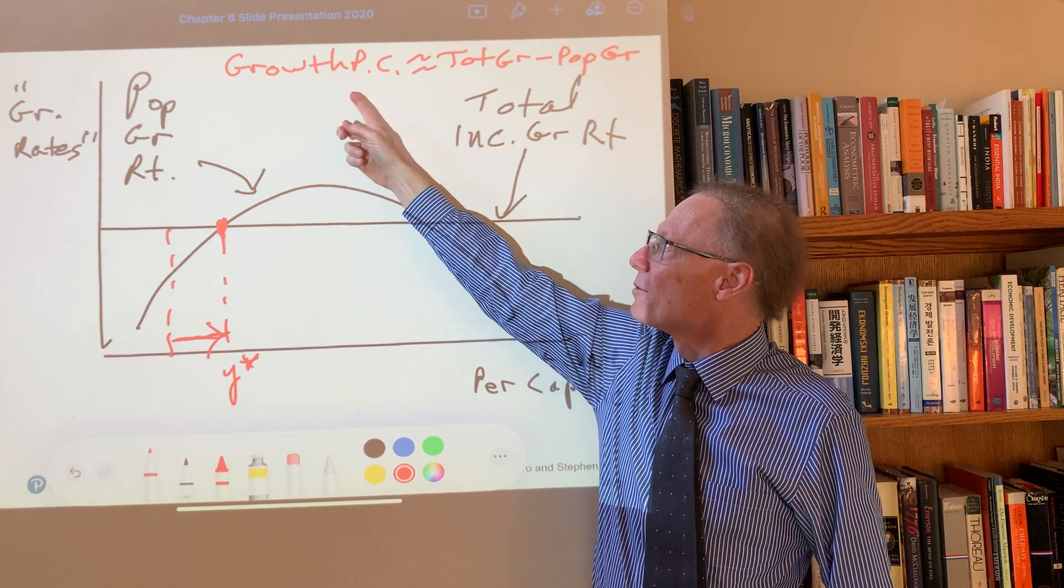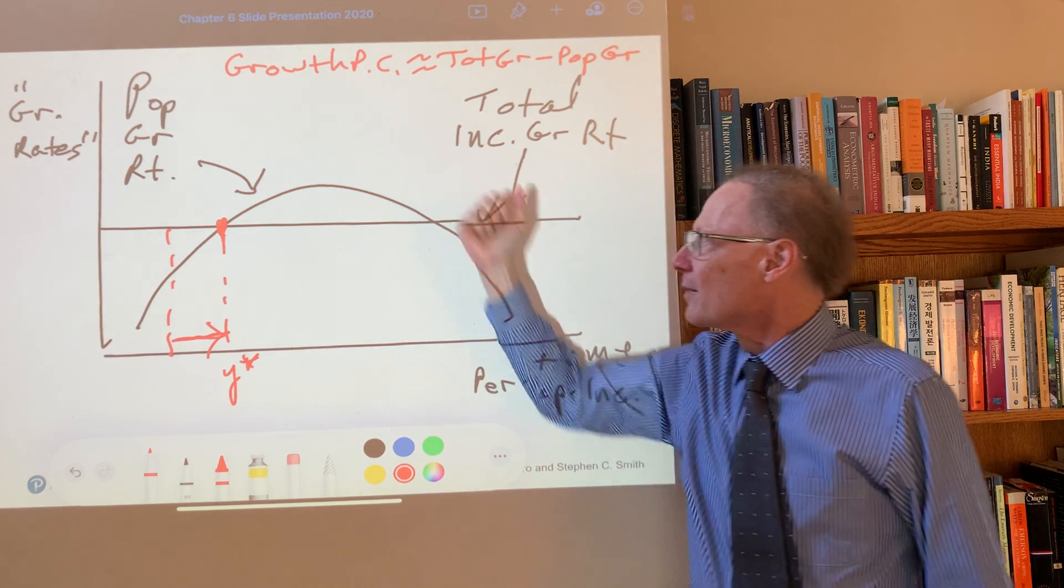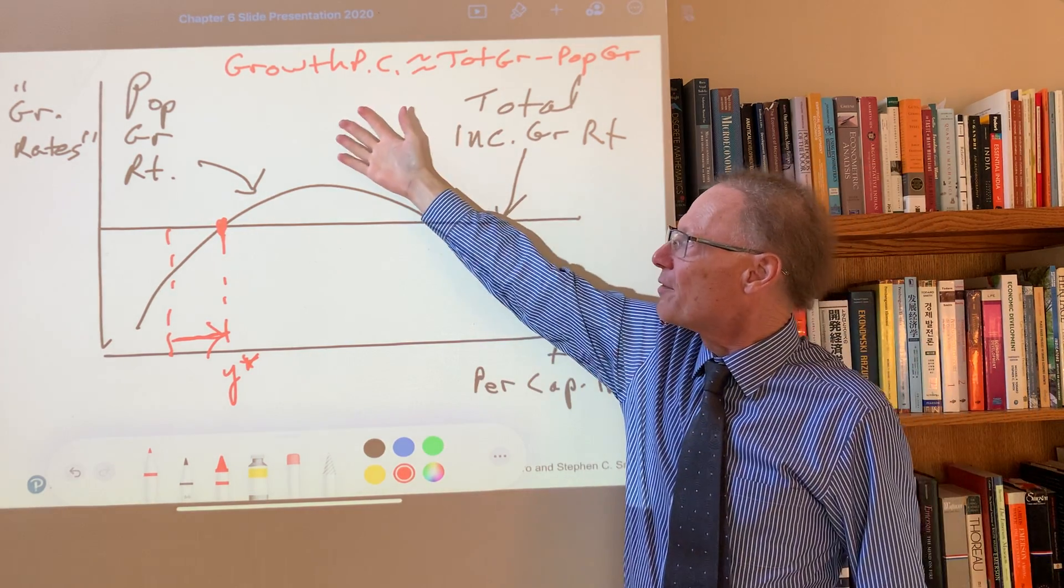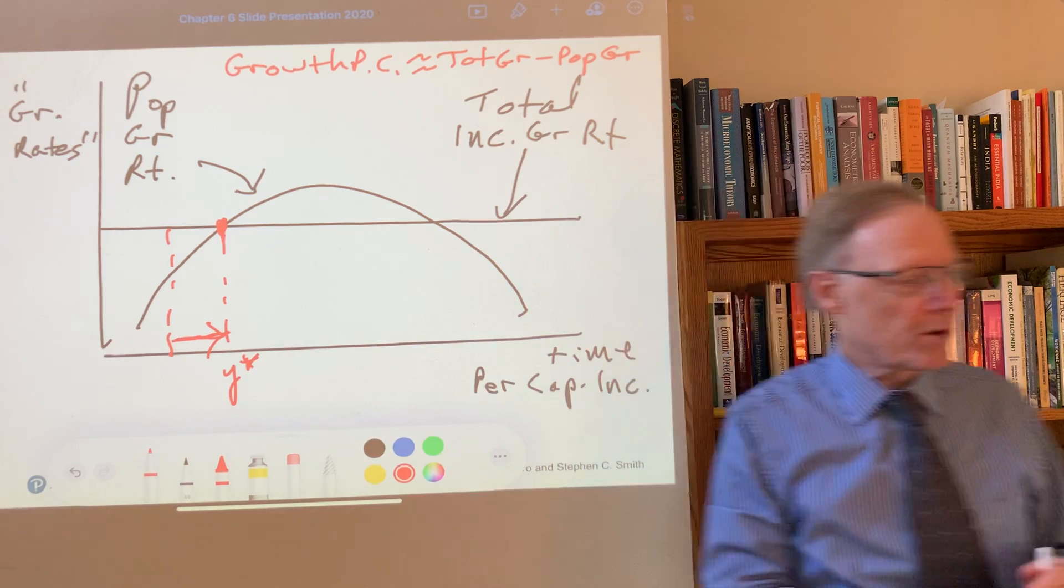So as a result, it must be that we have negative growth and we're moving back toward the equilibrium.